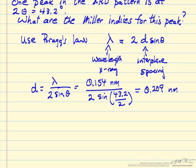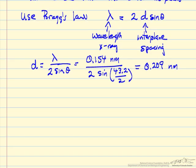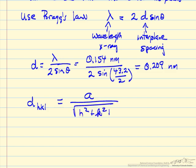We need to use a relationship from geometry that says the spacing between planes with Miller indices h, k, and l equals, for face-centered cubic structure, the unit cell dimension a over the square root of h²+k²+l². For FCC, the unit cell dimension equals 2 times the atomic radius times √2.